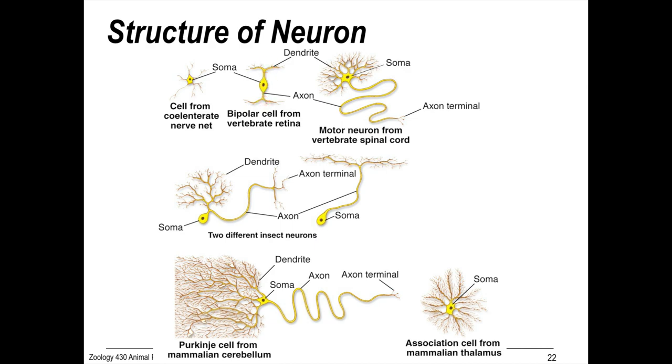Bipolar cells communicate information between different groups of neurons, and are common in the retina, for example.